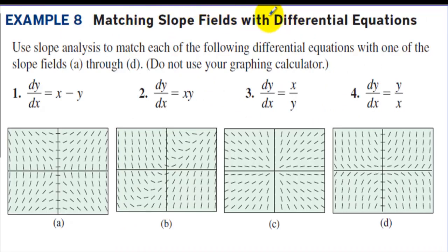Example 8. Matching slope fields with differential equations. Use slope analysis to match each of the following differential equations with one of the slope fields A through D. Do not use your graphing calculator. Now what I do is I look for slopes of 0 or slopes of undefined. Now for this one, when x is 1 and y is 1 we'll have a slope of 0. When we have 2 and 2 that will be a slope of 0. So we're looking at (1,1), (2,2), (3,3), (4,4) all have slopes of 0. Well this one doesn't look like it's it. This one definitely has some possibilities of the slope being 0. This one is ruled out, and I would say this one's ruled out. So looks like 1 has to be letter B.